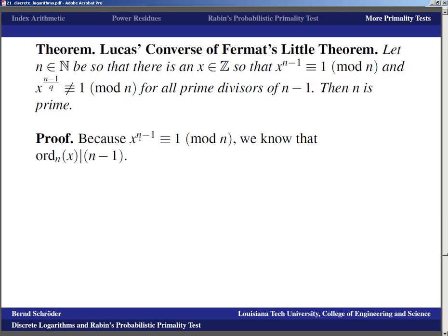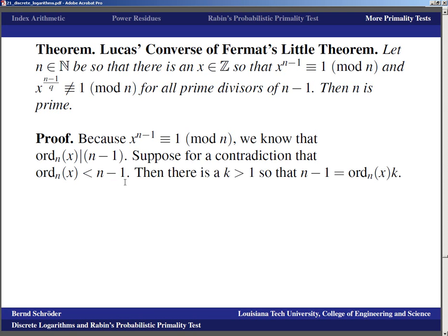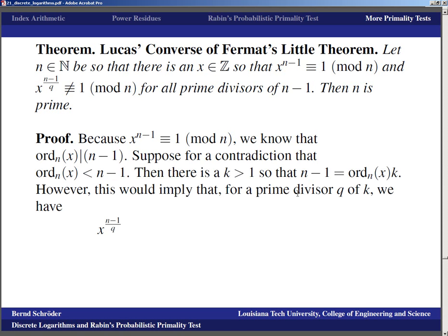Proof sketch: We know x^(N-1) ≡ 1 (mod N), so the order of x modulo N divides N-1. Suppose for contradiction the order is strictly smaller than N-1. Then N-1 = (order of x)·k, and for some prime divisor q of k, x^((N-1)/q) = (x^(order))^(k/q) ≡ 1 (mod N), contradicting the hypothesis. Therefore the order of x is N-1 = φ(N), implying N is prime.